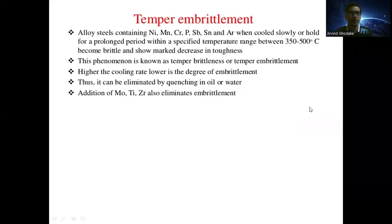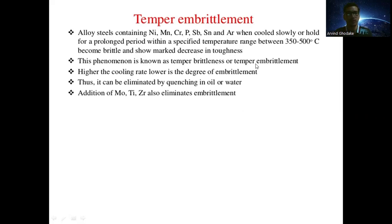Temper embrittlement: alloy steels containing nickel, manganese, chromium, phosphorus, antimony, and tin, when cooled slowly or held for a prolonged period within the temperature range of 350 to 500°C, become brittle and show a marked decrease in toughness. This phenomenon is known as temper brittleness or temper embrittlement. Higher cooling rates lower the degree of embrittlement, so it can be eliminated by quenching in oil or water. The addition of molybdenum and titanium also eliminates embrittlement.